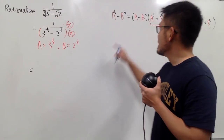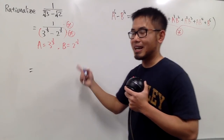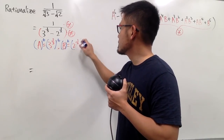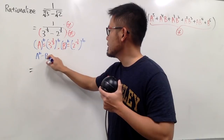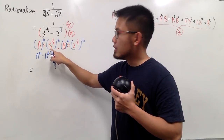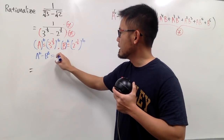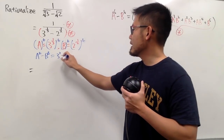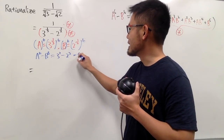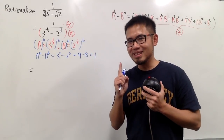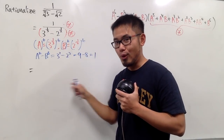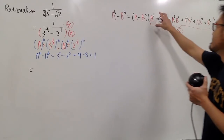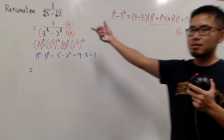The denominator will be really easy. If you take (3 to the 1/3) to the 6th power, you multiply the exponents and get 3 to the 2nd. And (2 to the 1/2) to the 6th power becomes 2 to the 3rd. So the denominator is 3 squared minus 2 cubed, which is 9 minus 8, and that nicely equals 1. So the denominator in the end is just 1 — you don't even have to write it over 1 if you don't want to. We only need to multiply the top by the second factor.